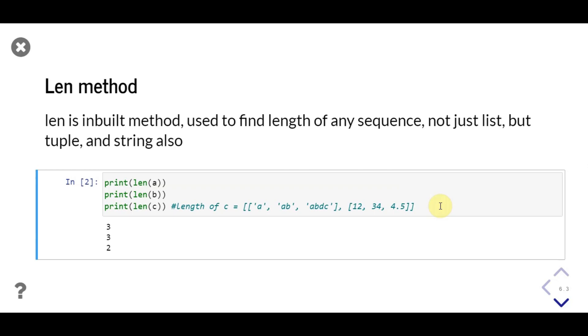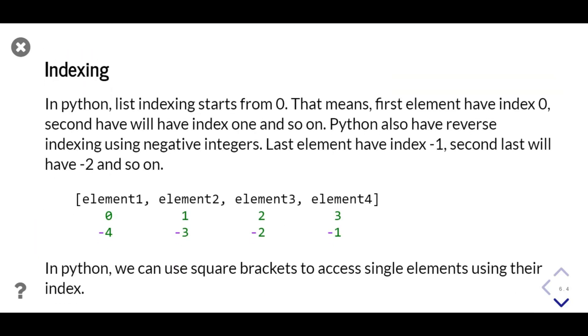Using `len`, the length of both lists stored in a and b is 3. The length of the list stored in c is 2, because there are two list objects in that list.